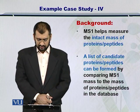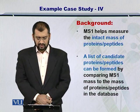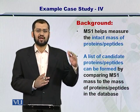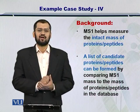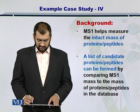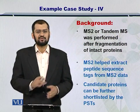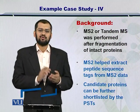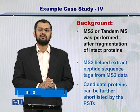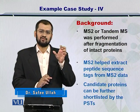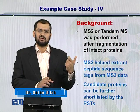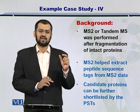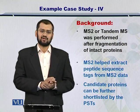MS1 helps measure the intact mass of the protein and a candidate list is formed after filtering the protein database for that specific mass. As a second step, we further shortlisted the candidate protein list by employing MS2, which provided us with the peptide sequence tags. We searched these peptide sequence tags in the protein sequence databases, and those proteins that contain those peptide sequence tags were shortlisted further.